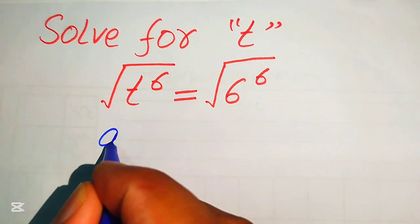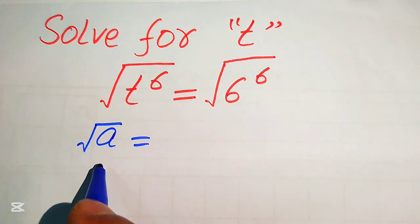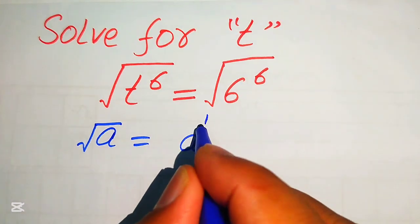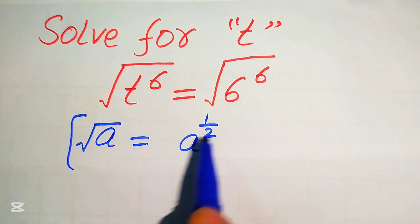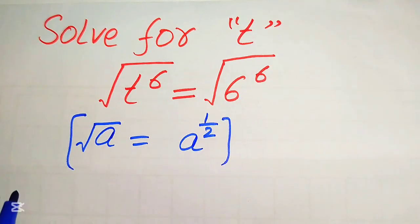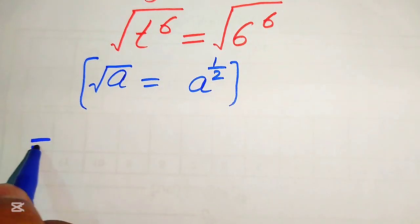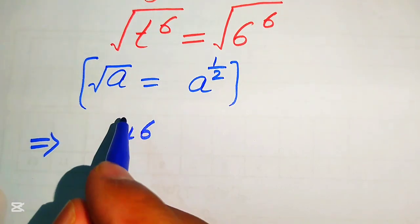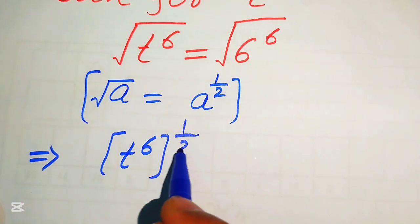You know that if you have the square root of a, this is the radical form, and if you convert this into the exponential form, we write it as a to the power of 1 over 2. According to this rule, we first convert our given question into the exponential form. We rewrite t to the power of 6 with the radical written as power 1 over 2.